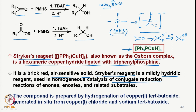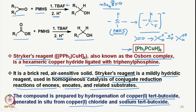It allows the conjugate reduction of enones, enoates, and related substrates, allowing conjugate addition of hydrogen. The compound is prepared by hydrogenation of copper tertiary butoxide generated in situ from copper chloride and sodium tertiary butoxide. This copper tertiary butoxide is then hydrogenated in the presence of triphenylphosphine to give the corresponding Osborne complex or Stryker's reagent.